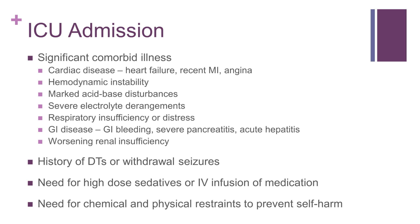When assessing patients with alcohol withdrawal, it's important to keep in mind that due to the high morbidity of the condition, many patients will need to be monitored in the intensive care unit. In general, patients going through alcohol withdrawal who also have significant comorbid medical conditions should be monitored in the ICU. This includes patients with significant cardiac disease, severe electrolyte disturbances, respiratory distress, or GI bleeding. You may also consider ICU admission if the patient has a history of significant withdrawal complications, such as DTs or withdrawal seizures. Many patients wind up being transferred to the ICU because they require a continuous infusion of benzodiazepines to control their symptoms. Finally, some patients also require ICU-level care because they become so agitated and combative that they need to be chemically sedated and restrained to prevent them from injuring themselves.